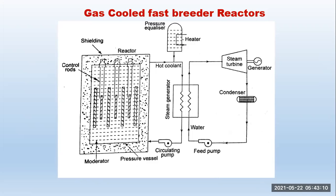Gas-cooled graphite reactor. The important components are: moderator, which also acts as a control rod; control rod; shielding; reactor; heater; steam generator; circulating pump; steam turbine; generator; and condenser.